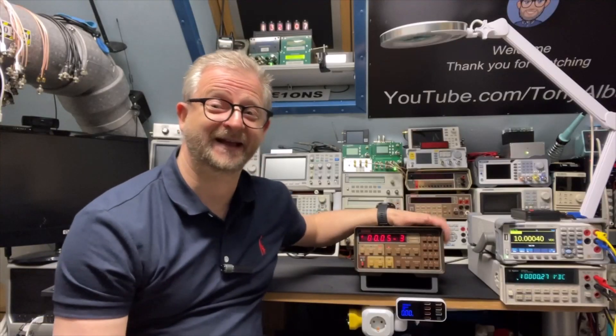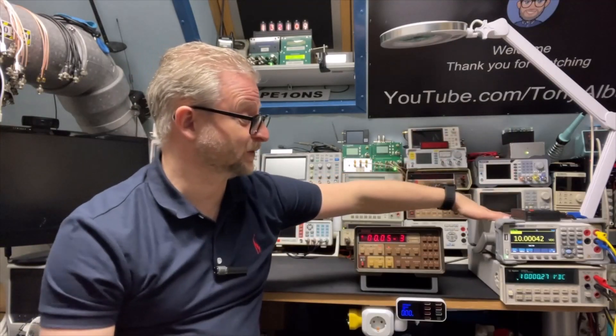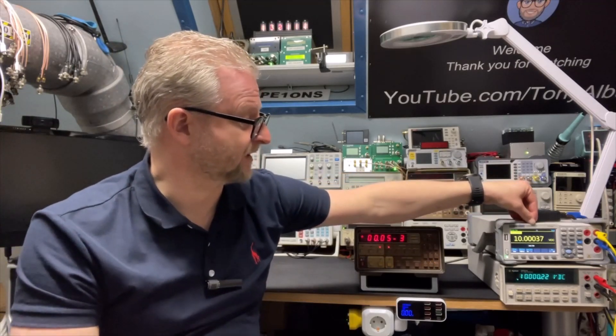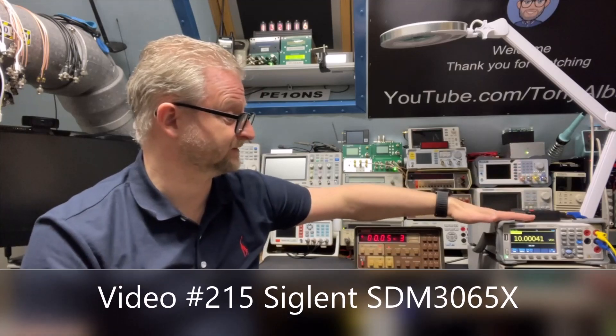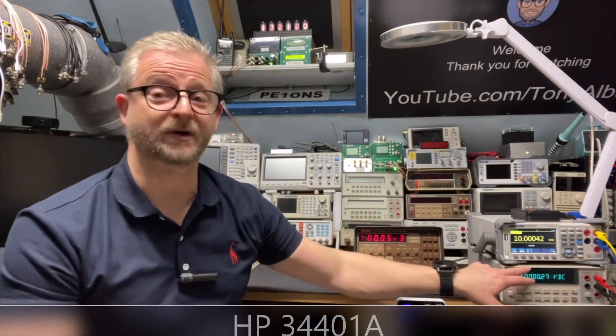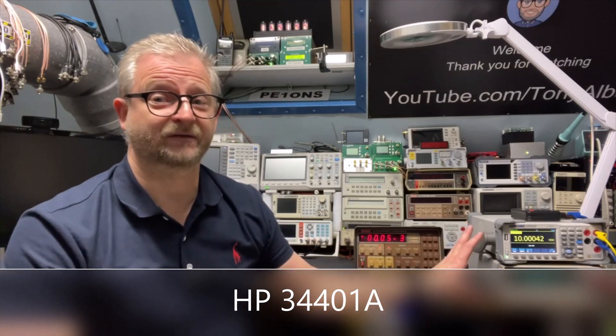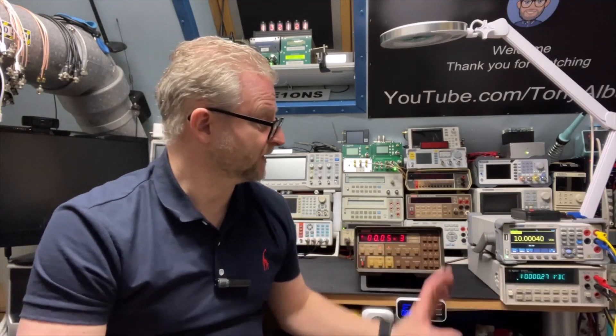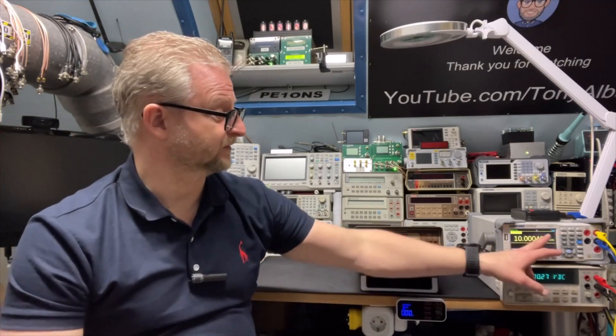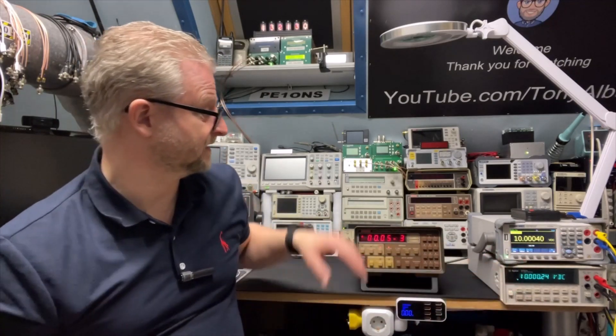So on the bench, I have already my multimeters here heating up. It is the Siglent 3065, it is 6.5 digits. I also have the Siglent 3440A. They are both heating now for an hour. I will wait another hour and as you can see, they almost agree up to a few microvolts. So that is okay.